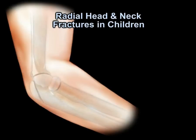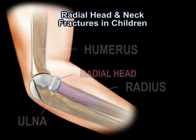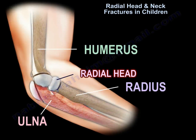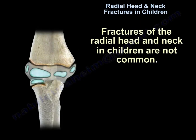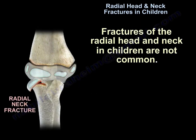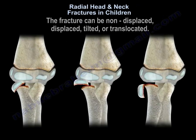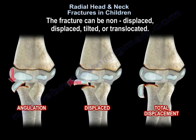Radial head and neck fractures in children. Here is an elbow diagram where you can see the radial head. The fracture can be non-displaced, displaced, tilted, or translocated.